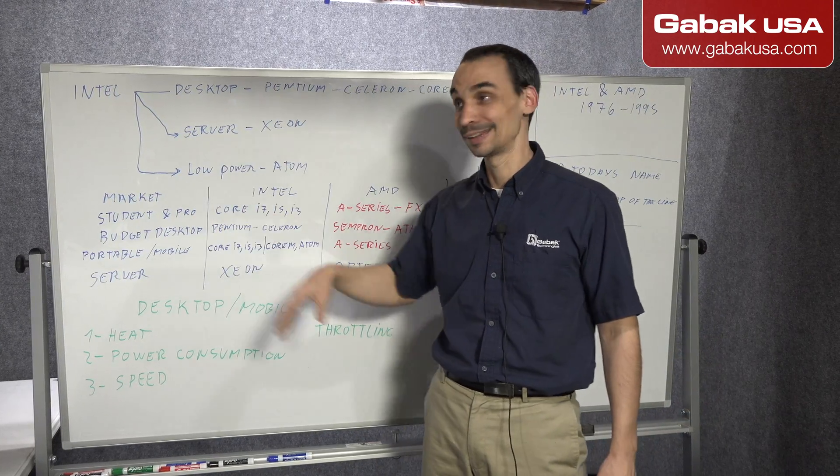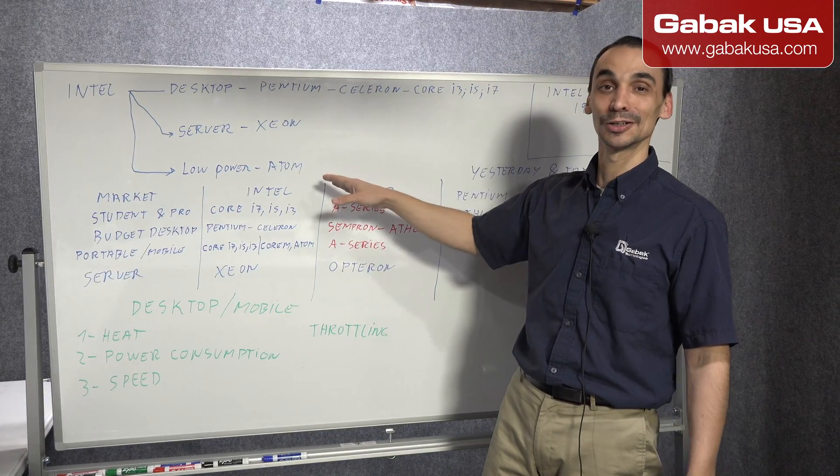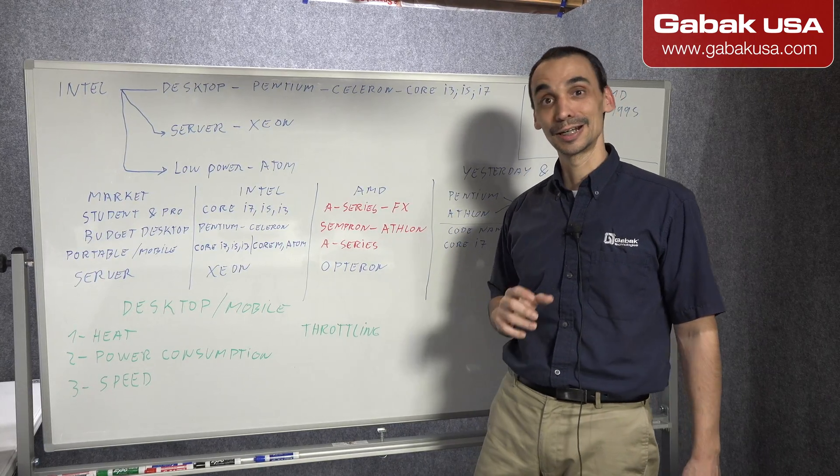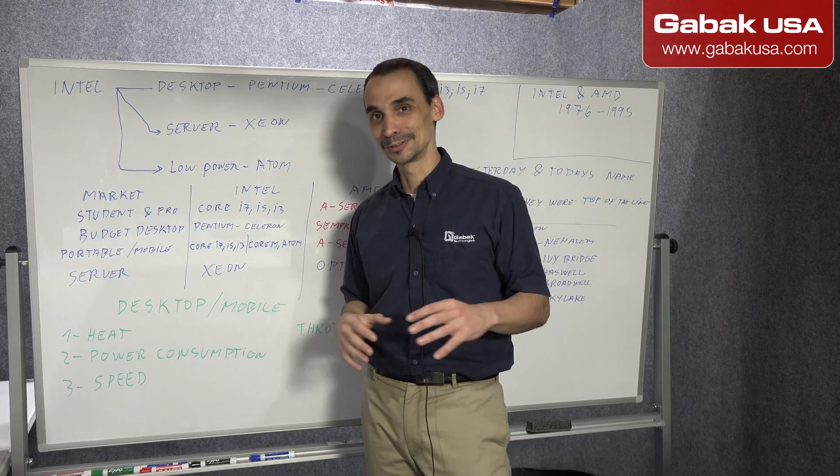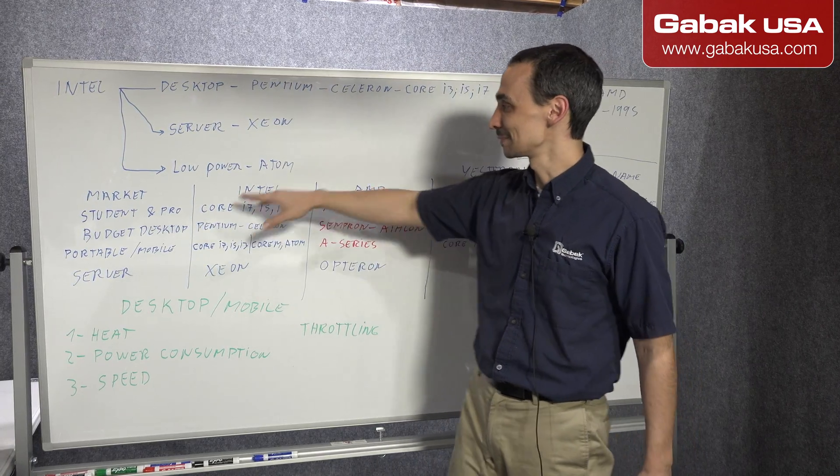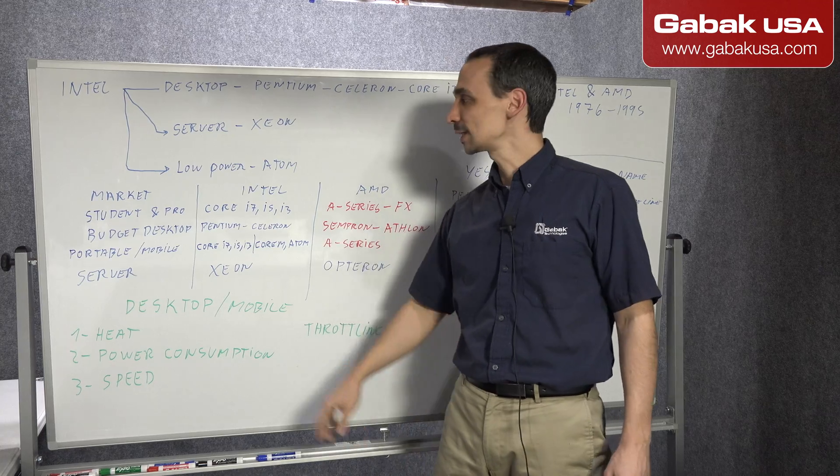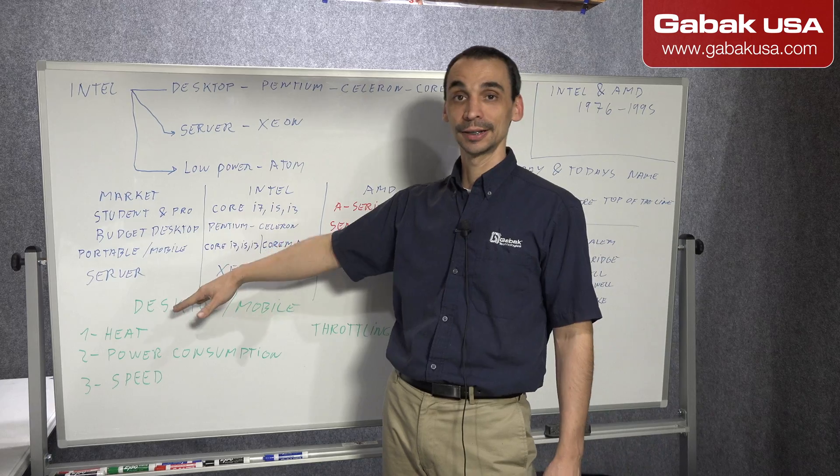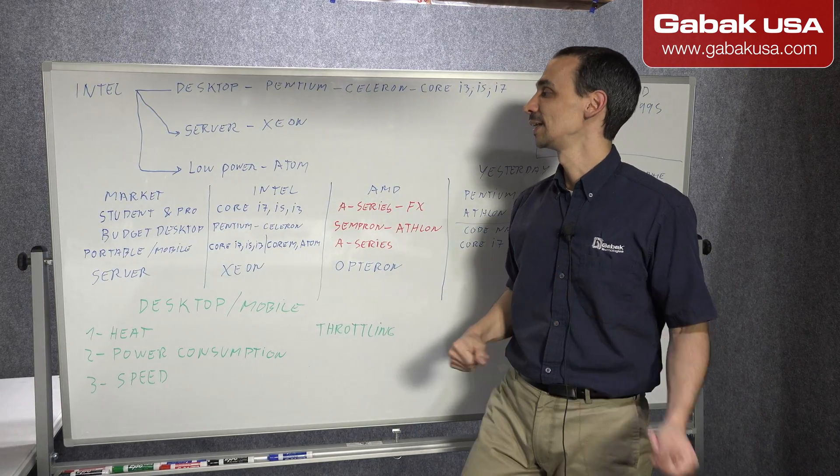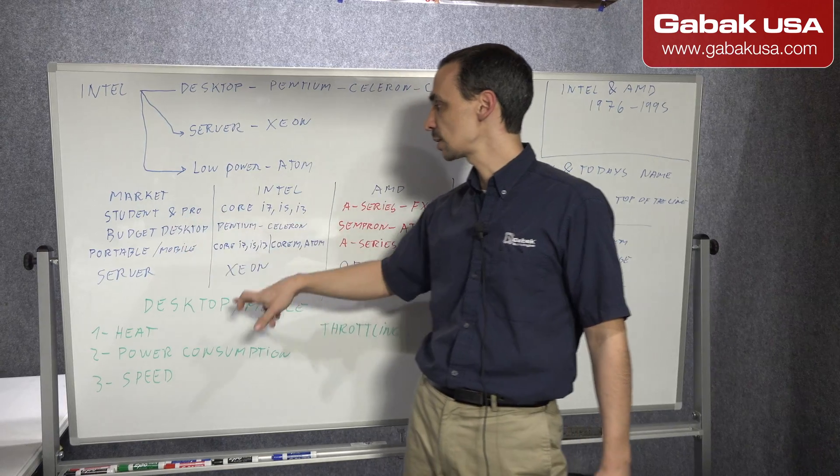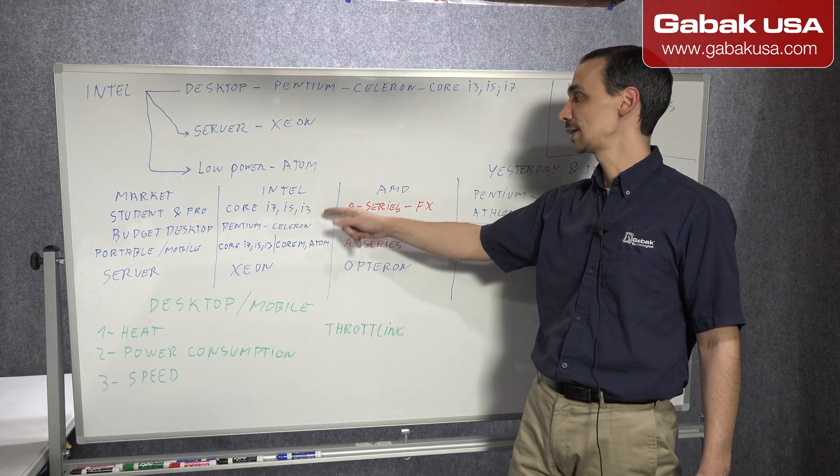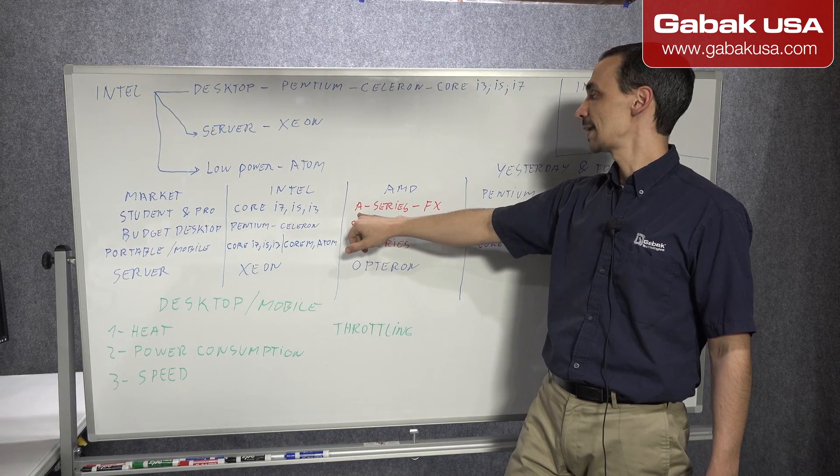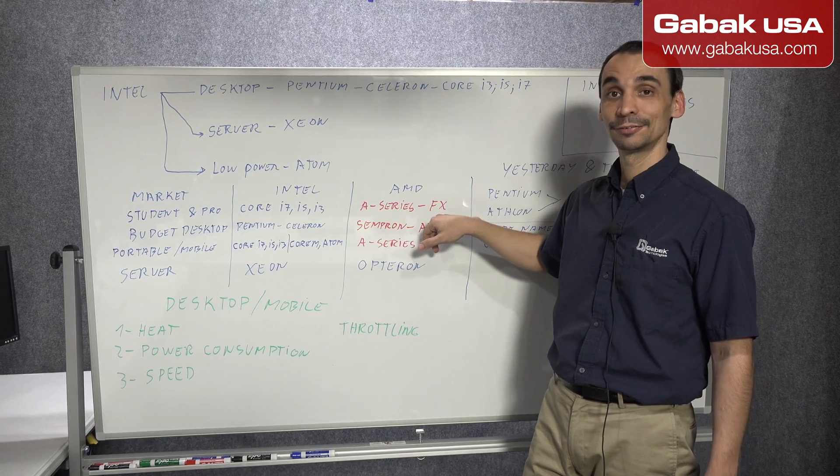So I don't recommend it for anything except, I don't know, if it is very basic, but I saw a few computers with Atom processor and they are very slow with Windows 7 or Vista or something like that. I don't recommend it. So besides that, we are going to talk about the market. So the market was for Intel and AMD. They have their different name and they were aiming to different people. So for students and professionals, you have a Core i7, i3 and i5. And in the case of AMD, you have the A series and the FX.